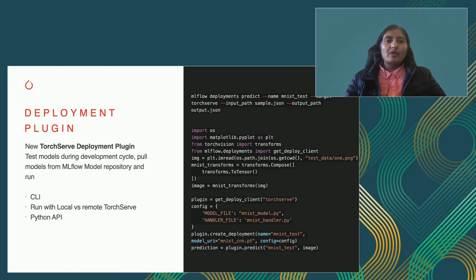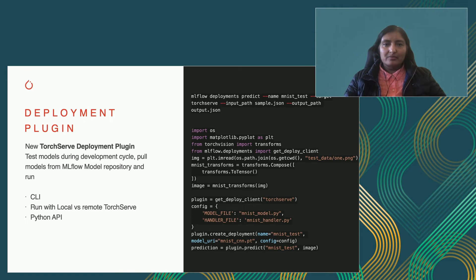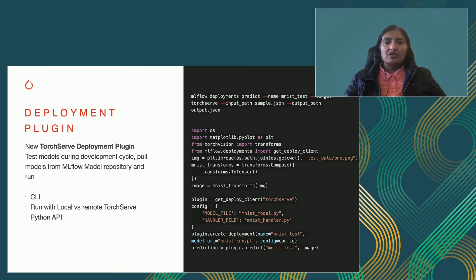In the MLflow deployment plugin, we have created a very easy way to deploy these models as part of your MLflow project itself. All you need to do is call MLflow deployment, and then you can launch predictions on your models. Both CLI and Python API versions are supported. You can run TorchServe on either your local machine or a remote machine, and you can run inferences once you deploy your models from your MLflow model registry.